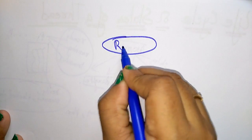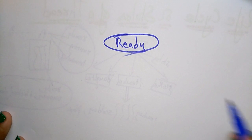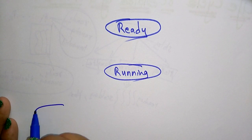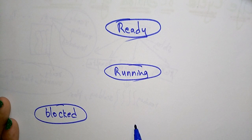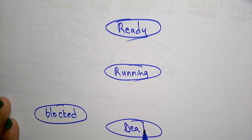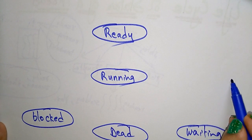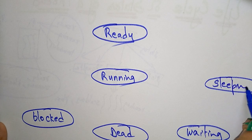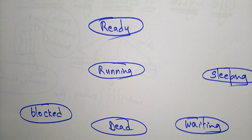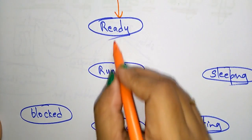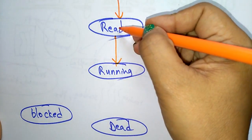Let me explain the life cycle of a thread. The different states present in a thread are: ready state, running state, blocked state, dead state, waiting state, and sleeping state. These are the different states present in a thread.